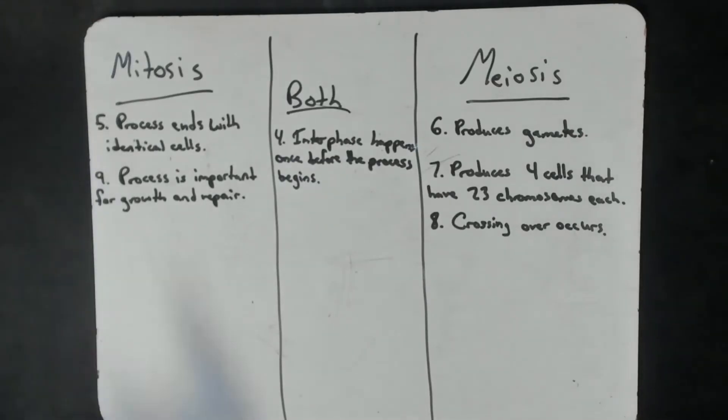Number five, process ends with identical cells. That's only mitosis. Remember, the point of meiosis is to get four cells that are totally different from the parent cell. So mitosis is the only one that's going to end in identical cells.